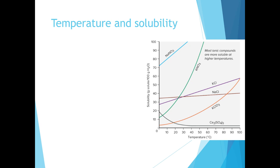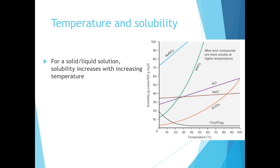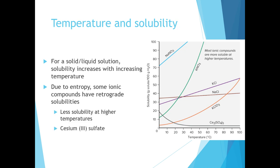Temperature and solubility are related, and depending on the type of solute, increasing temperature will either increase or decrease solubility. Here we have a chart of temperature on the x-axis and solubility in grams of solute per 100 grams of water on the y-axis with various ionic compounds. In general, we see an increase in temperature paired with an increase in solubility — that is not always the case, like in the example of cesium sulfate, which has a retrograde solubility. Due to entropy, some ionic compounds show decreasing solubility with increasing temperature, but this is a rare case. In general, as we increase temperature, we increase solubility.